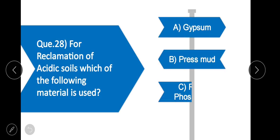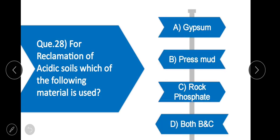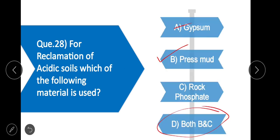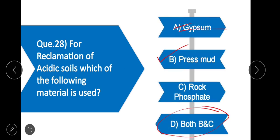Question 28: For reclamation of acidic soil, which material is used? The correct option is B — both press mud and rock phosphate are used for reclamation of acidic soils, but not gypsum.